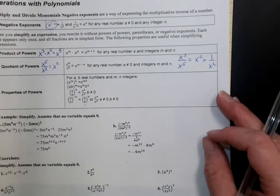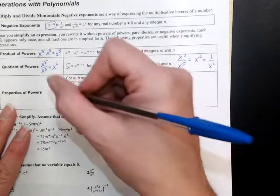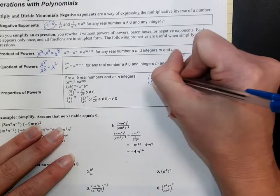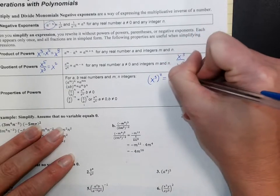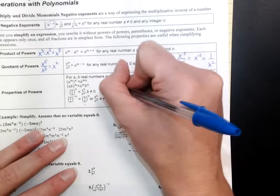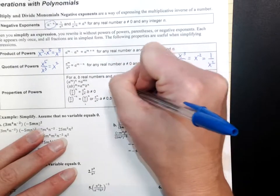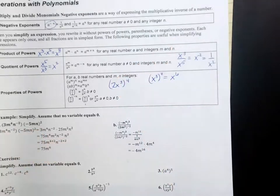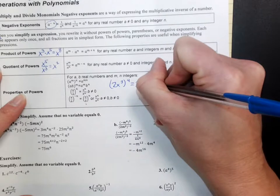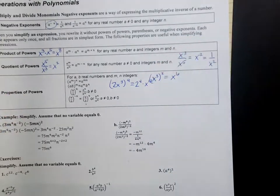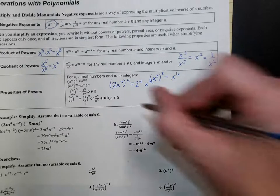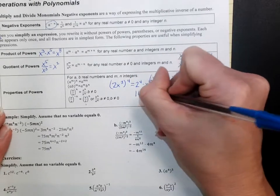The other ones are more of our power rules. A power to a power — you multiply those powers. So if I have x cubed squared, that's going to be x to the 6th power. Anytime you have two things, so if I had 2x to the 3rd to the 4th power, that would be the same as 2 to the 4th power times x to the 12th power. Remember, you multiply those. Well, 2 to the 4th power: 2 times 2 is 4, times 2 is 8, times 2 is 16. So that would be 16x to the 12th.